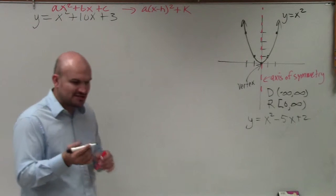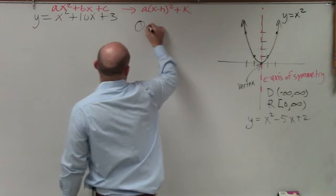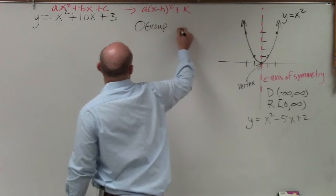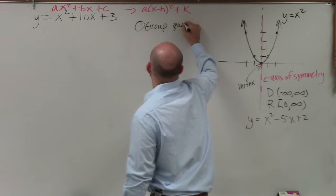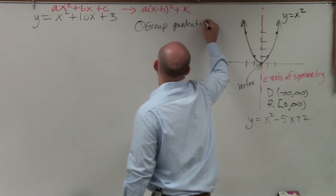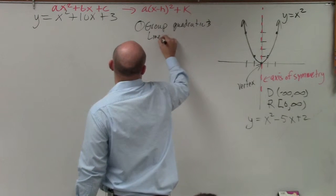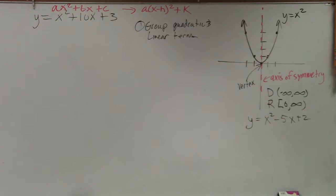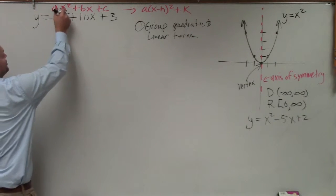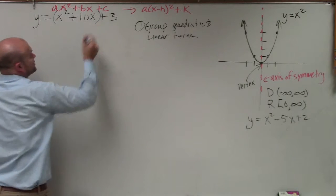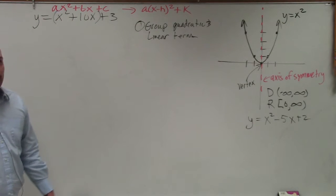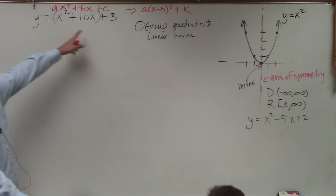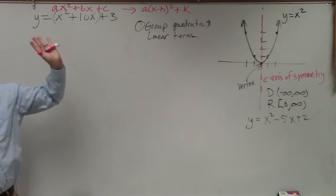So first step that you guys are going to do is you're going to group your quadratic and linear terms. So the quadratic term is the term raised to the second power. Your linear term is the x raised to the first power. You're going to group them. That's all you do. Just write little parentheses around the first two terms. It's that easy.